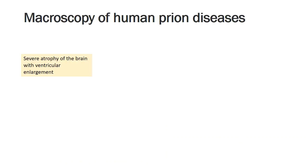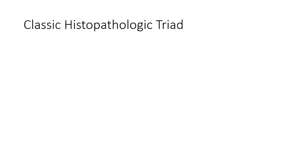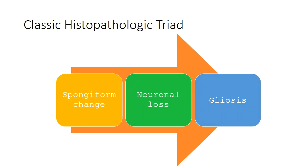Regarding the macroscopy of human prion diseases: the brain characteristically shows atrophy, and there is characteristic ventricular enlargement appreciated on macroscopy.